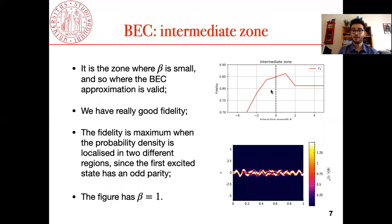The first one where the interaction strength is not too high has optimal fidelity. Here we can see the probability density function with respect to time, and the maximum fidelity is reached in this zone here where the probability density is localized in two different spaces, and this is important because the first excited state has an odd parity and so must be localized in two parts. This plot is for beta equal one.